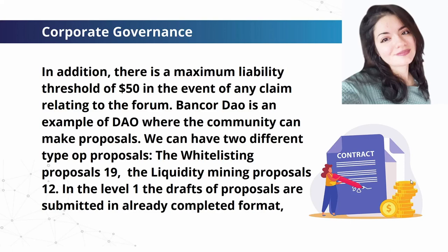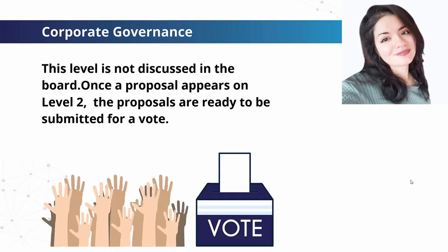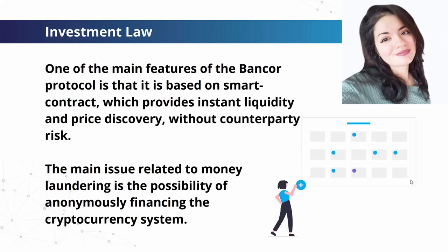Bancor DAO is an example of a DAO where the community can make proposals. There are two proposal types: whitelisting proposals, which elevate the status of a token to receive protection from loss, and liquidity mining proposals, which activate BNT rewards for liquidity providers on selected assets for a limited time. At Level 1, drafts of proposals are submitted in a completed format using templates provided by the Bancor DAO and are not discussed in the board. Once a proposal reaches Level 2, comments and feedback are restricted; the purpose of Level 2 is to announce to DAO members that proposals are ready to be submitted for a vote.